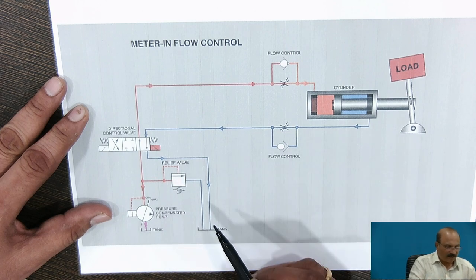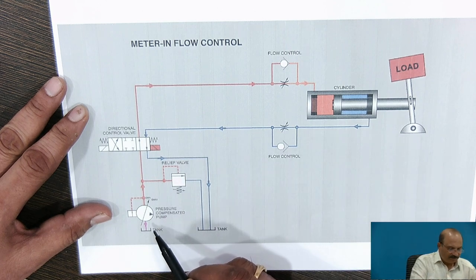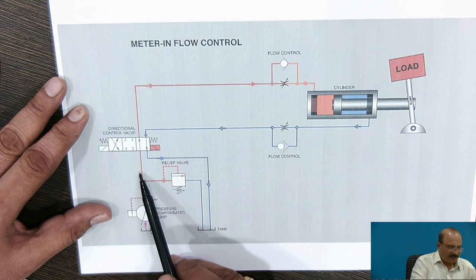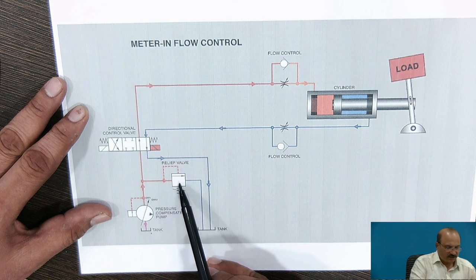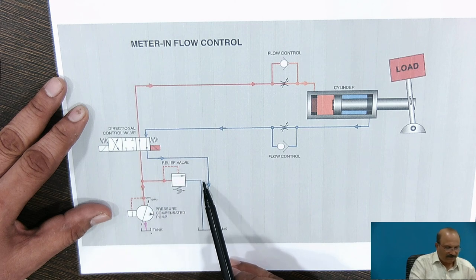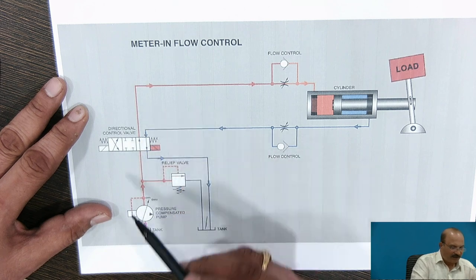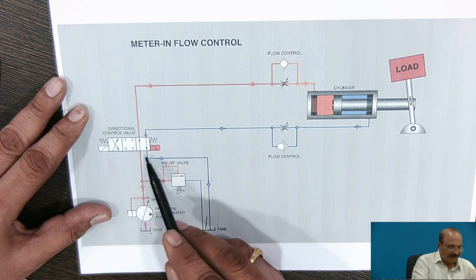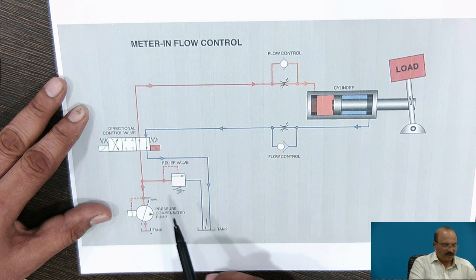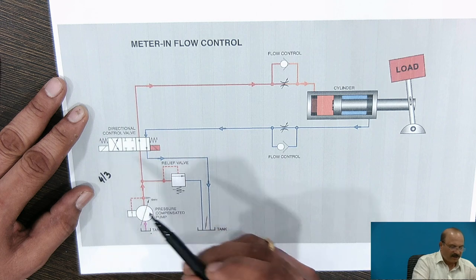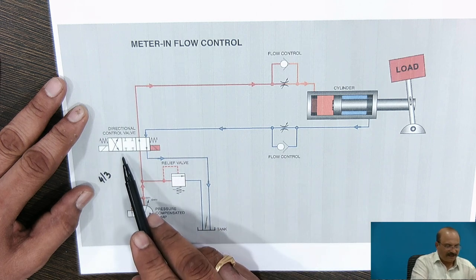So here we have the storage tank, then it comes to the pump. Whatever oil is being pumped in the upward direction, if the pressure is more than the designed pressure, then through the relief valve it will come back to the tank. While going in the upward direction, there is a directional control valve — we are calling this a 4 by 3, meaning 4 ports and 3 controls.